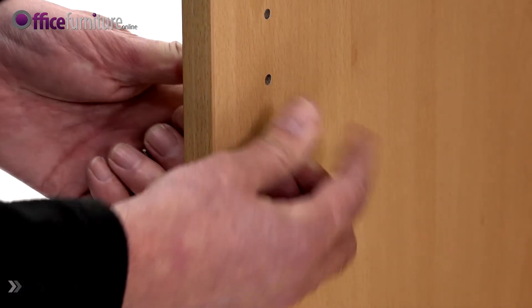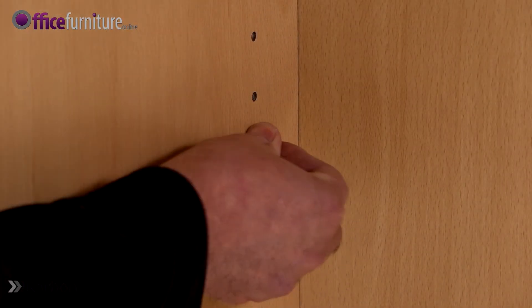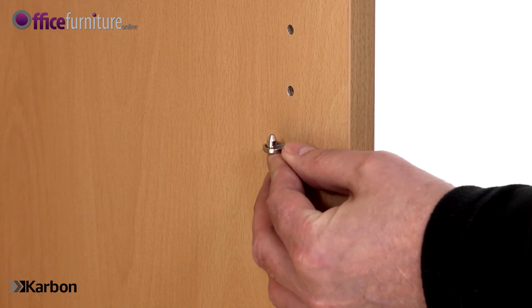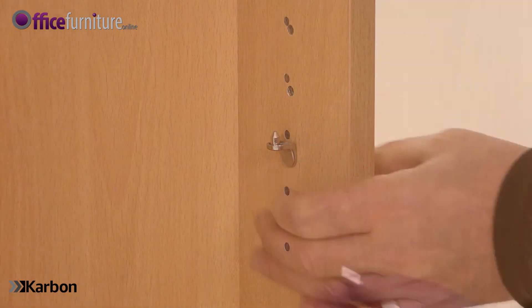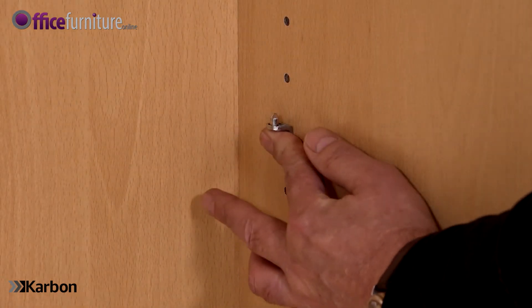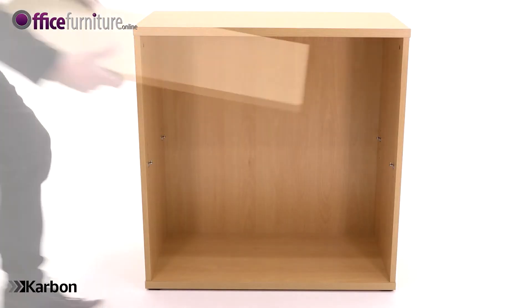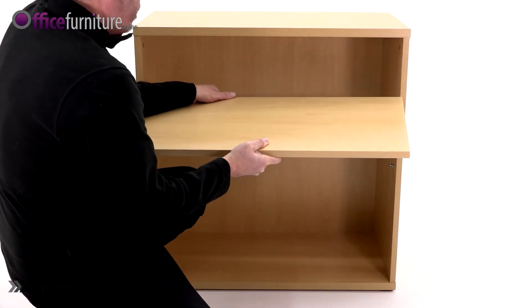Now to fit the adjustable height shelf. Insert the four shelf clips into height settings as desired. Position the adjustable shelf onto the shelf clips.